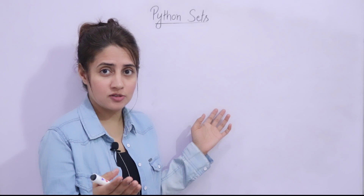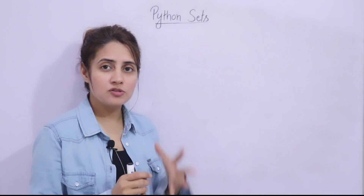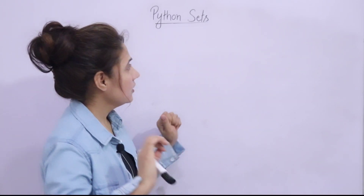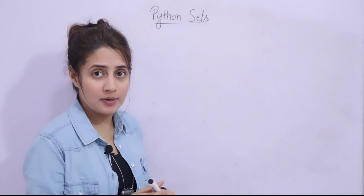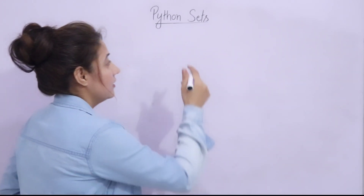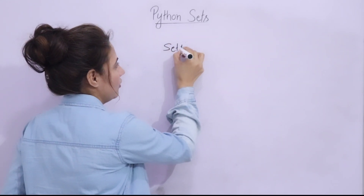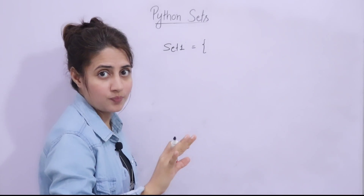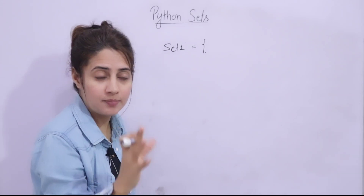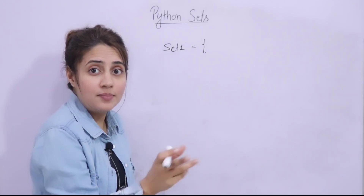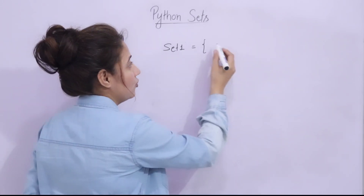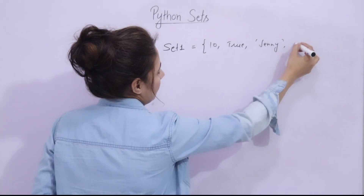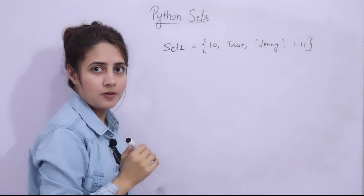Sets are almost the same as sets in mathematics. To define a set, you take a name like 'set1' and in curly brackets write down the multiple items you want to store. Set items can be of any data type: integer, string, float, or boolean. You can also have mixed data types — for example, storing an integer, a boolean, a string, and a float all in the same set.